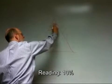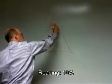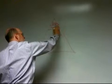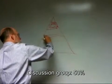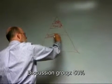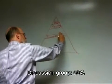Below that, it says reading, 10%. Somewhere down here in the middle, it says discussion group, 50%.